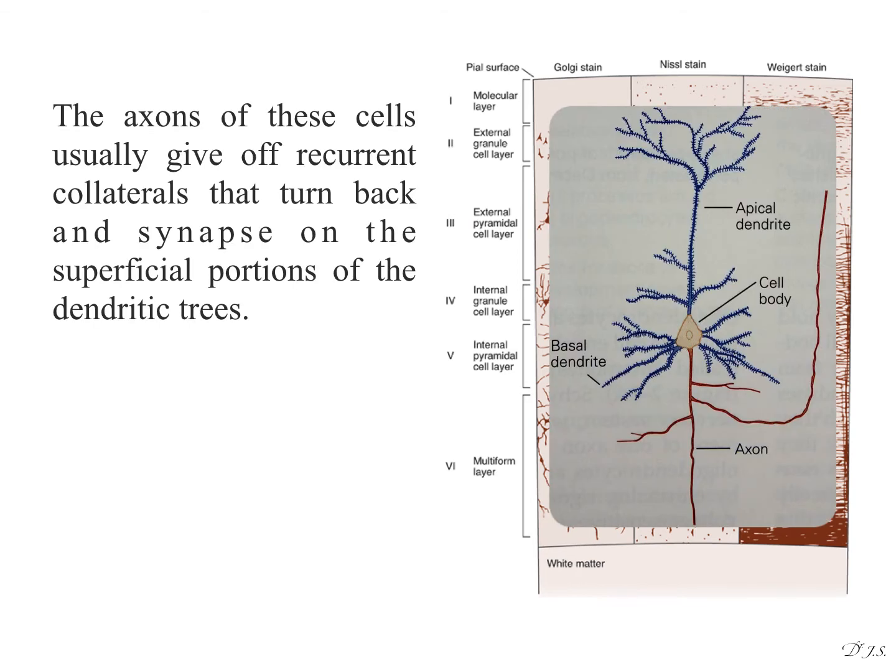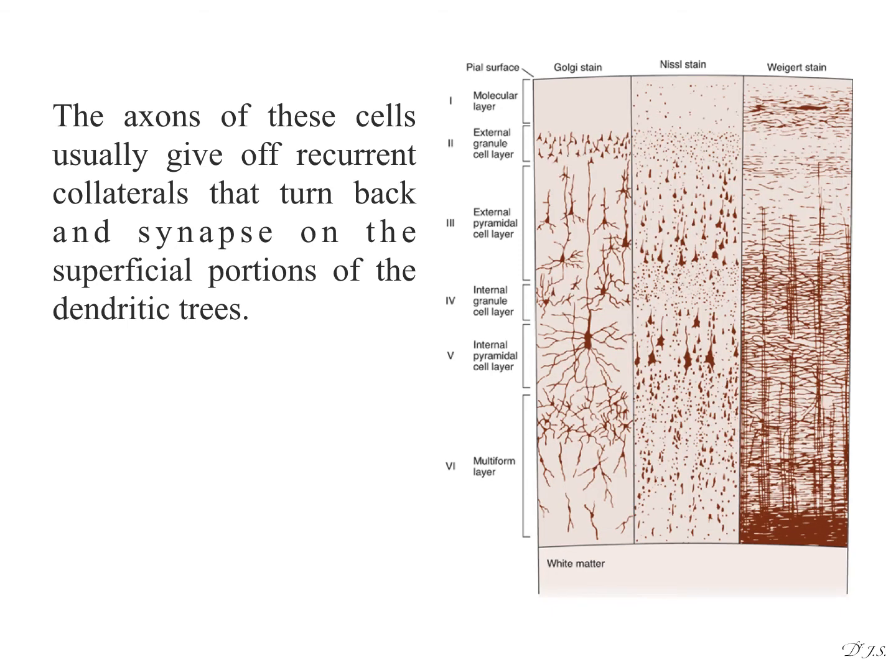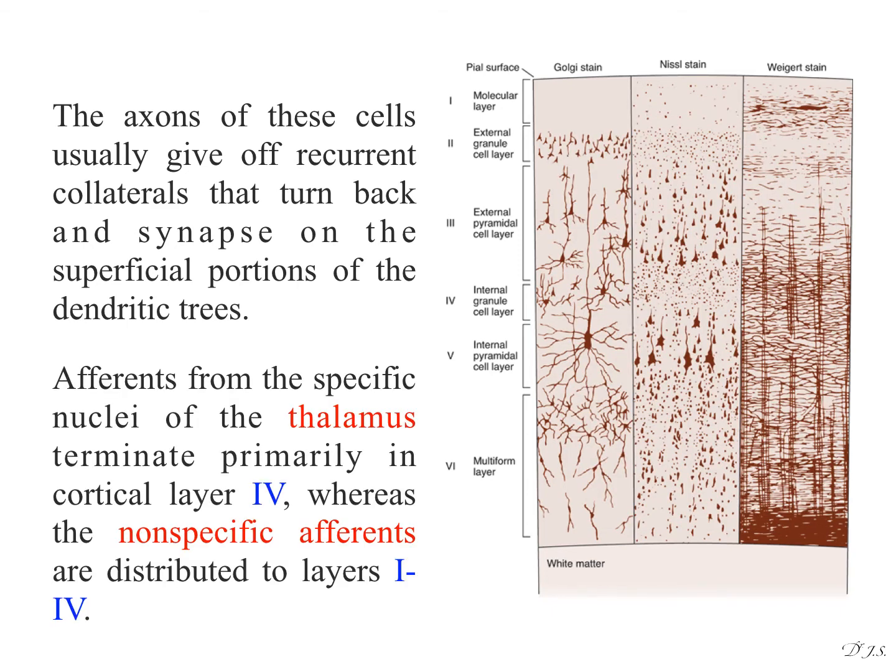The axons of these cells usually give off recurrent collaterals that turn back and synapse on the superficial portions of the dendritic trees. Afferents from the specific nuclei of the thalamus terminate primarily in cortical layer fourth, whereas the nonspecific afferents are distributed to layers first to fourth.